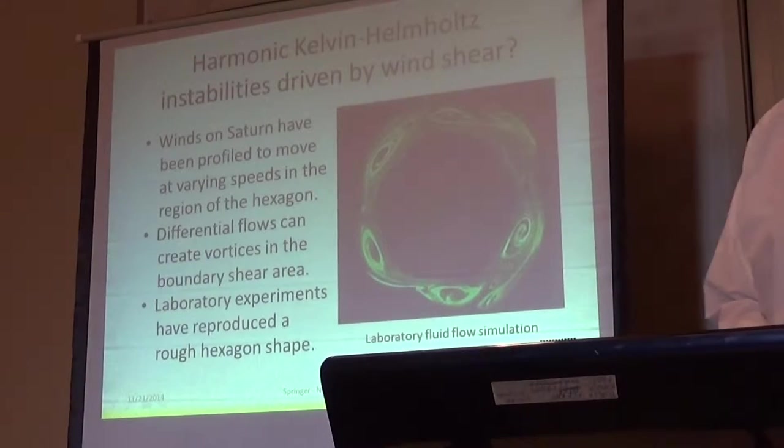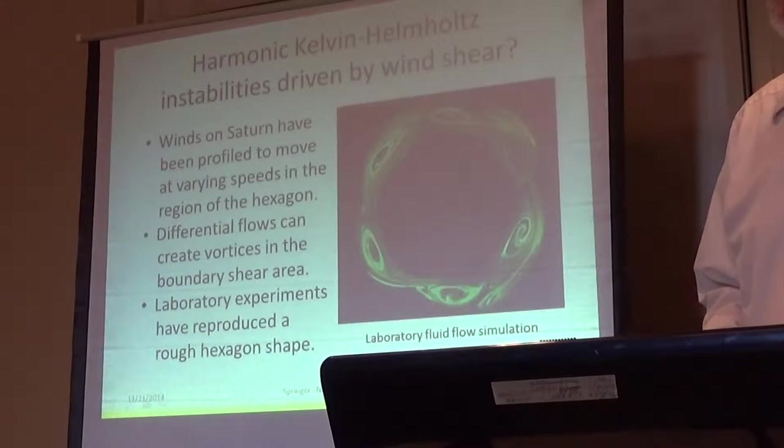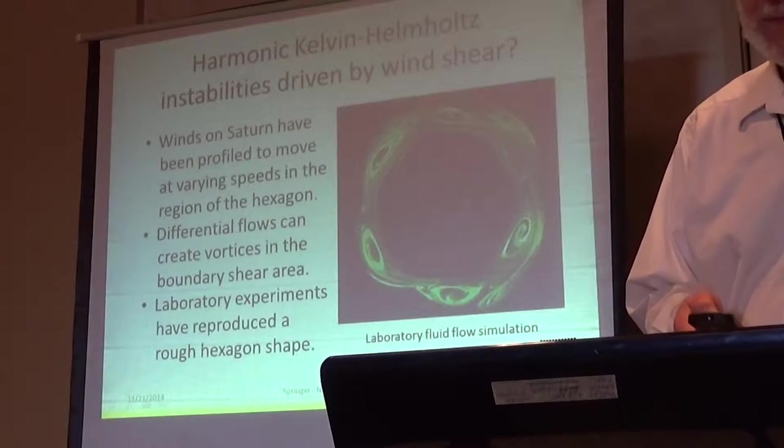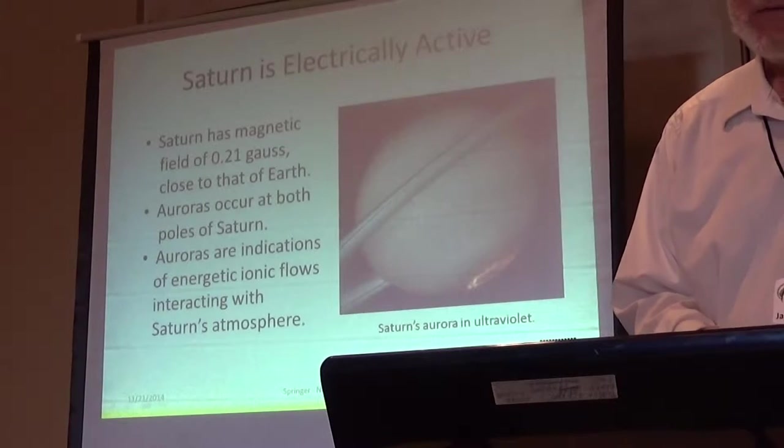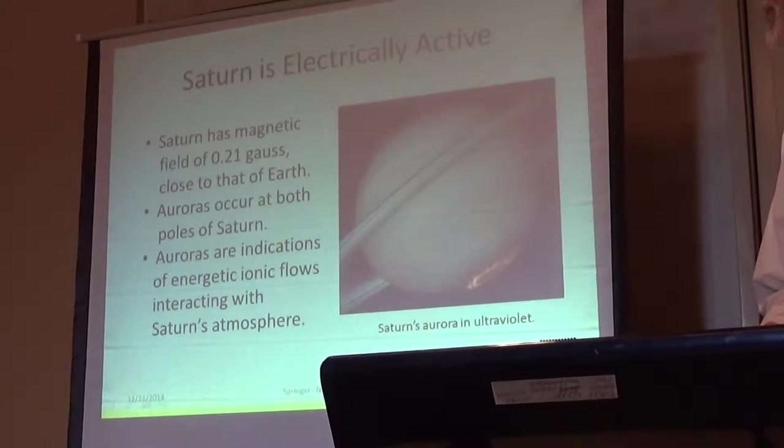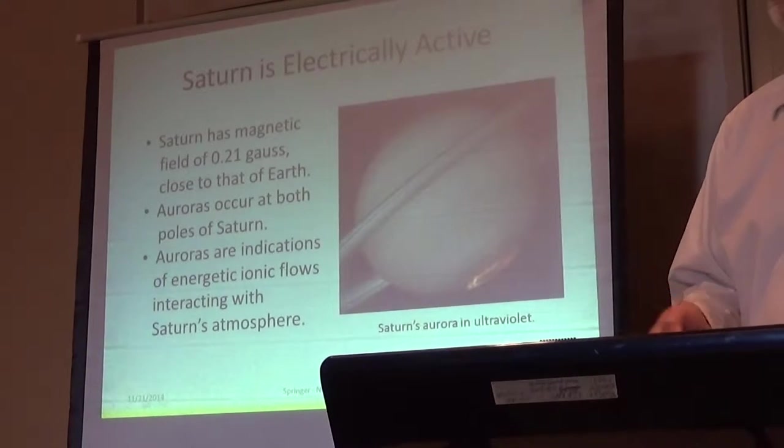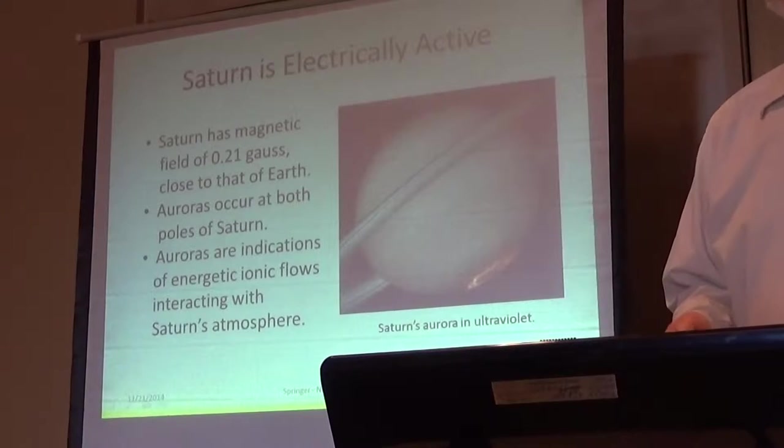And here's something that was done as an attempt to explain the hexagon. Someone took some instabilities and came up with this picture. I think what Barry's done is a lot more to the point. One thing Saturn is electrically active. It has a magnetic field just a little bit less than the Earth. It's also a strange field with some dipole and some quadrupole moments. It's not really understood very well.